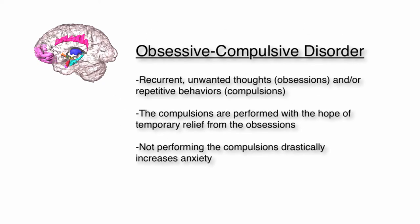The second anxiety disorder is called obsessive-compulsive disorder, or OCD. This disorder is characterized by recurrent, unwanted thoughts called obsessions, and/or repetitive behaviors called compulsions. The compulsions are often performed with the hope of preventing obsessive thoughts or making them go away. The compulsions provide temporary relief from the obsessions, but not performing them drastically increases anxiety.